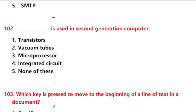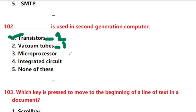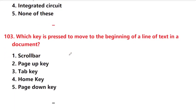Next question: what is used in second generation computers? Answer is option 1: transistor. Vacuum tubes is first generation; transistor is second generation. Next: which key is pressed to move to the beginning of a line of text in a document?